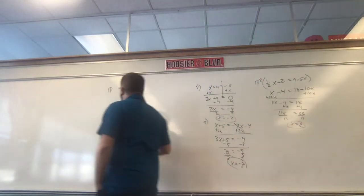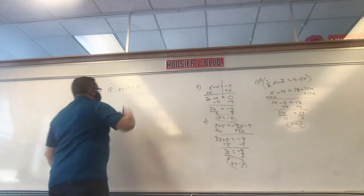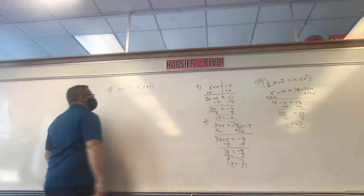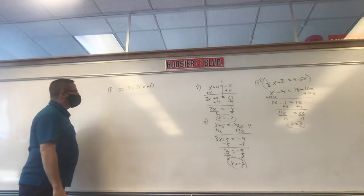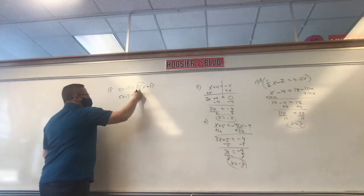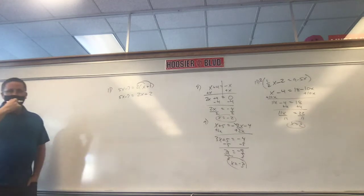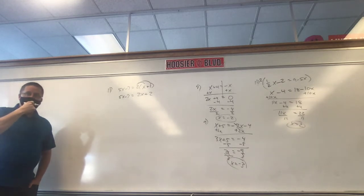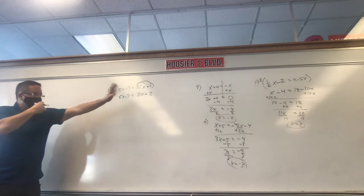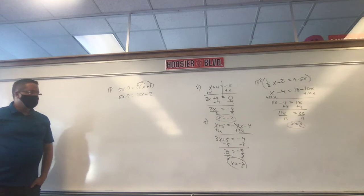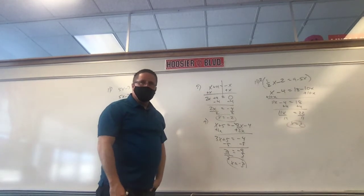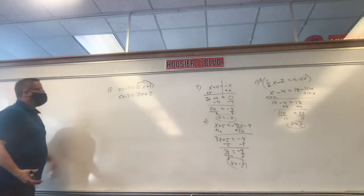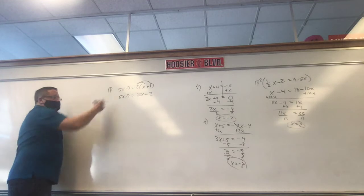5x minus 7 equals 2 times (x plus 1). This is something we haven't talked about yet today. Distribute first — we haven't distributed yet because we haven't had to. Now we're going to. 5x minus 7 equals 2x plus 2 after distributing. How is this different than the other questions? It's not any more difficult. Once you distribute, it's the same old stuff.